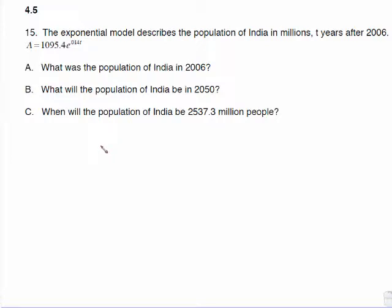4.5 gets us into some more word problems. Number 15 says the exponential model describes the population of India in millions t years after the year 2006. Here's your model.